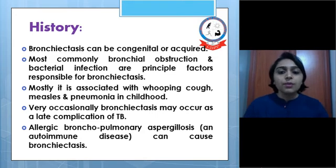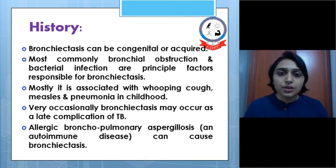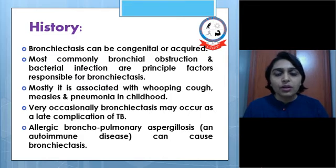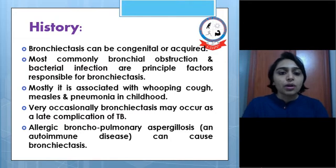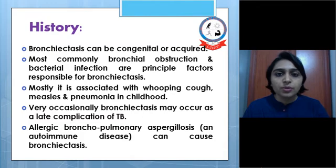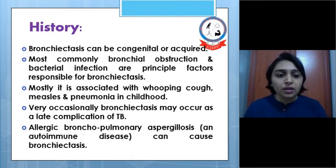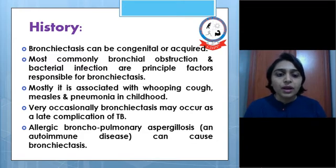History is very important — knowing the history of any lung disease patient allows us to identify 90% of the reason for the lung disease. Bronchiectasis can be congenital or acquired. Most commonly bronchial obstruction and bacterial infection are the principal factors responsible. It is mostly associated with whooping cough, measles, and pneumonia in childhood. Very occasionally bronchiectasis may occur as a late complication of tuberculosis.